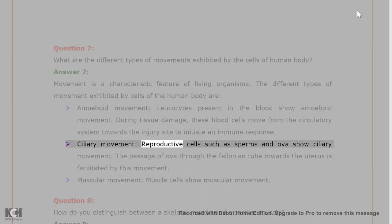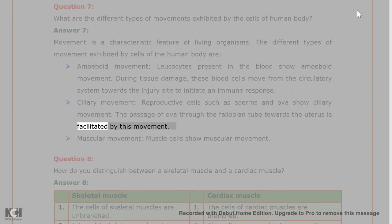Ciliary movement - Reproductive cells such as sperms and ova show ciliary movement. The passage of ova through the fallopian tube towards the uterus is facilitated by this movement. Muscular movement - Muscle cells show muscular movement.